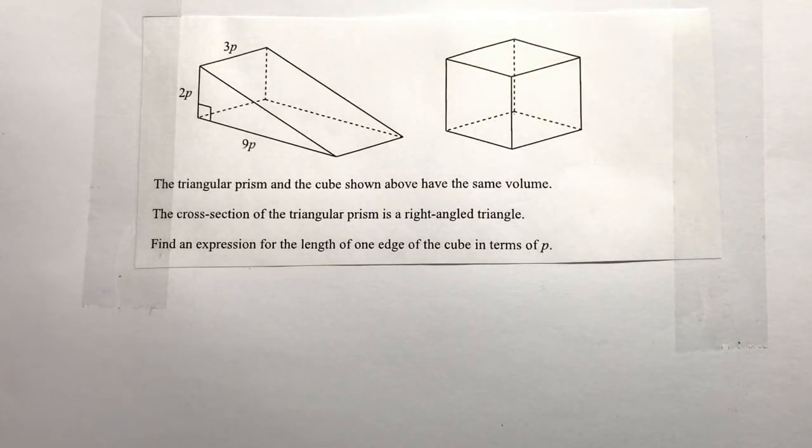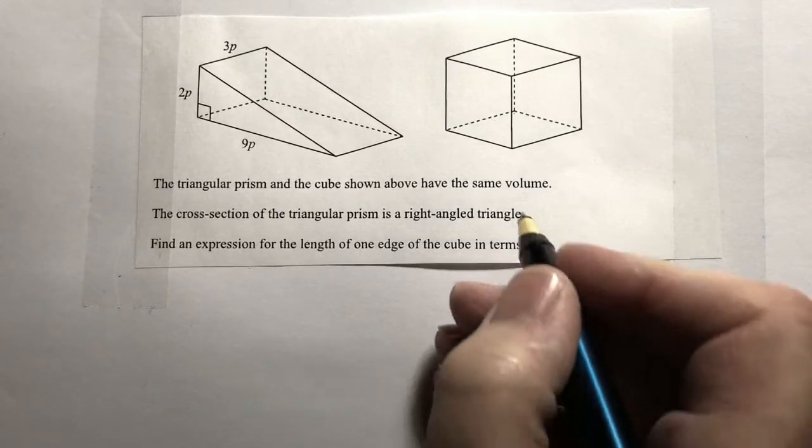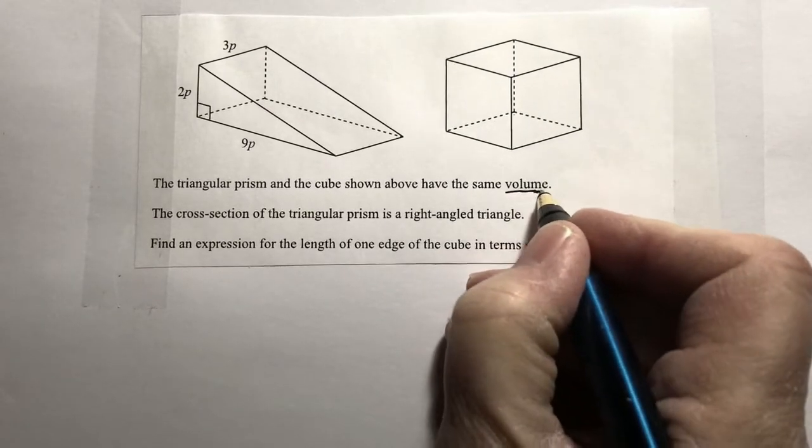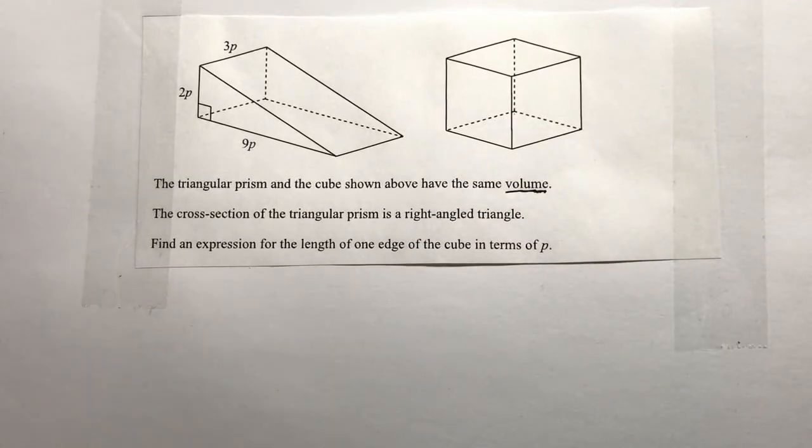Hi, in this video we've been told that the triangular prism and the cube shown have the same volume. That's very important in this question—the same volume as each other. It says the cross-section of the triangular prism is a right-angled triangle.